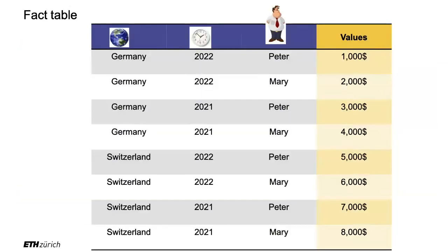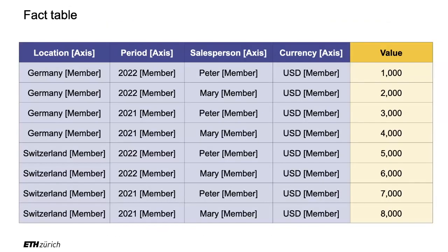In business reporting — especially in the US with XBRL — they add square brackets to clarify what is a dimension, what is a value of a dimension. An axis is what they call a dimension, a member is a possible value for a dimension, and then there's the actual value on the right. You'll often see this terminology if you're involved in business reporting, and many countries are adopting it.